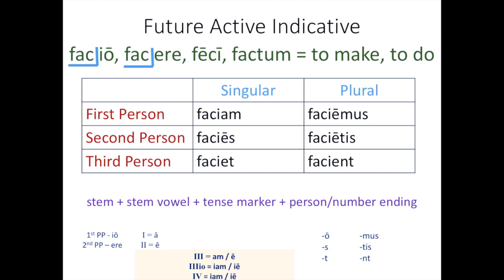And then remember here, facient is your third person plural. We do not change it to a U because this is where we need that E to tell us its future as our tense marker. And now it's your turn to practice with audio once you've copied all of these down.